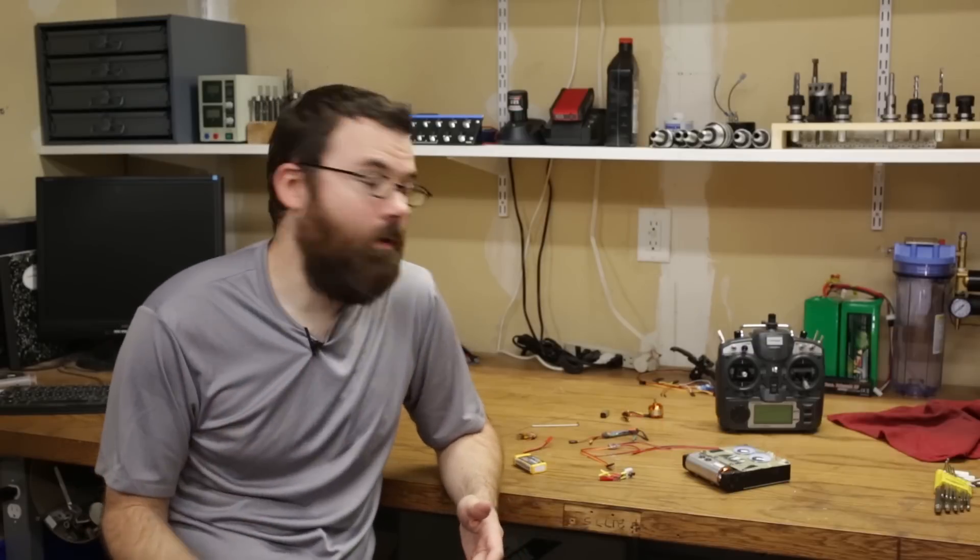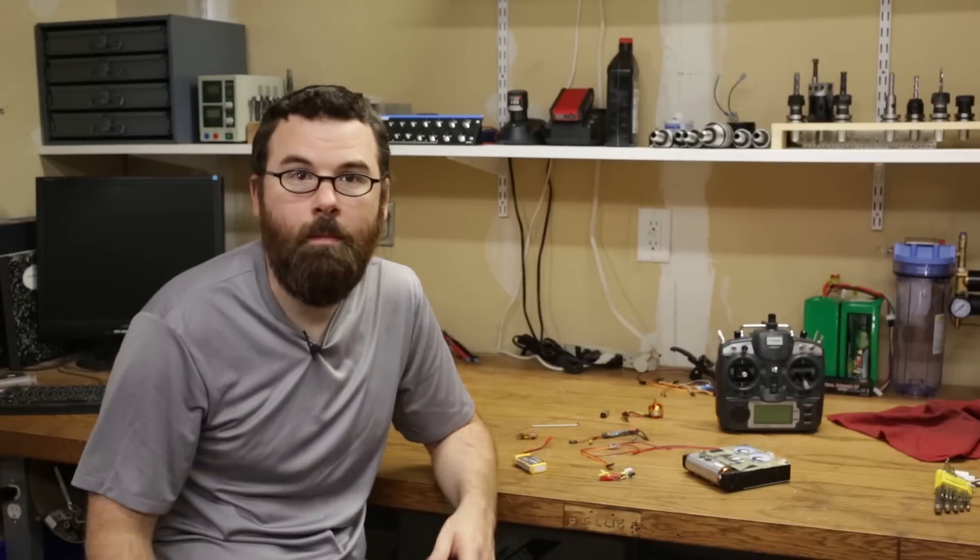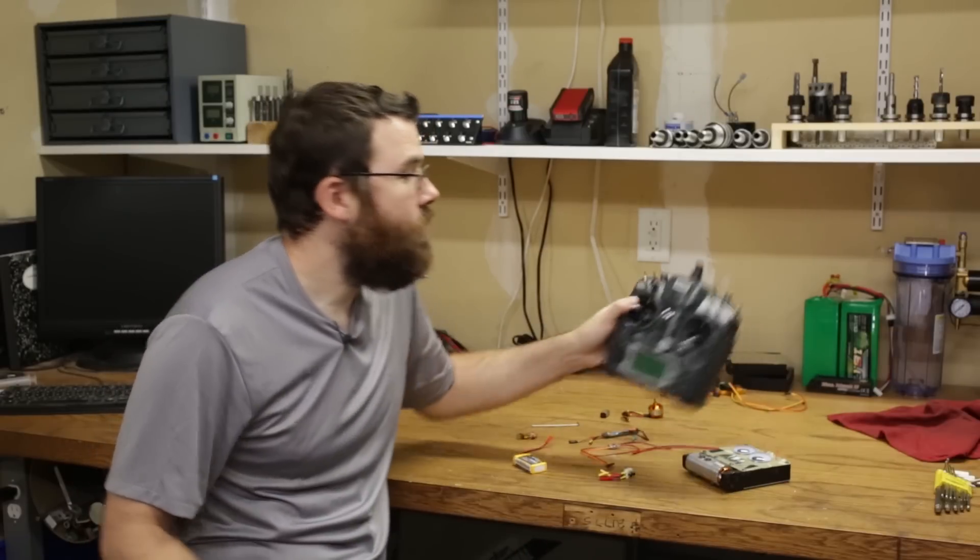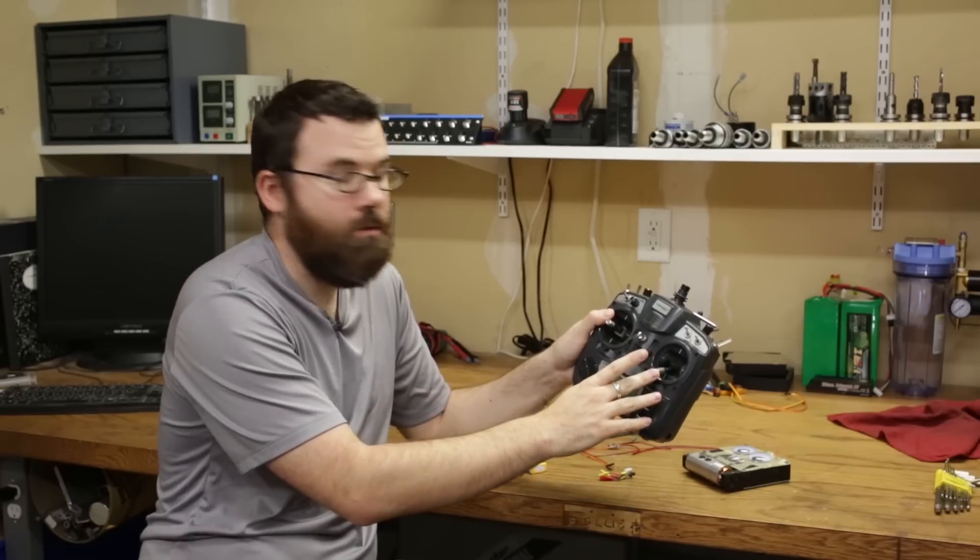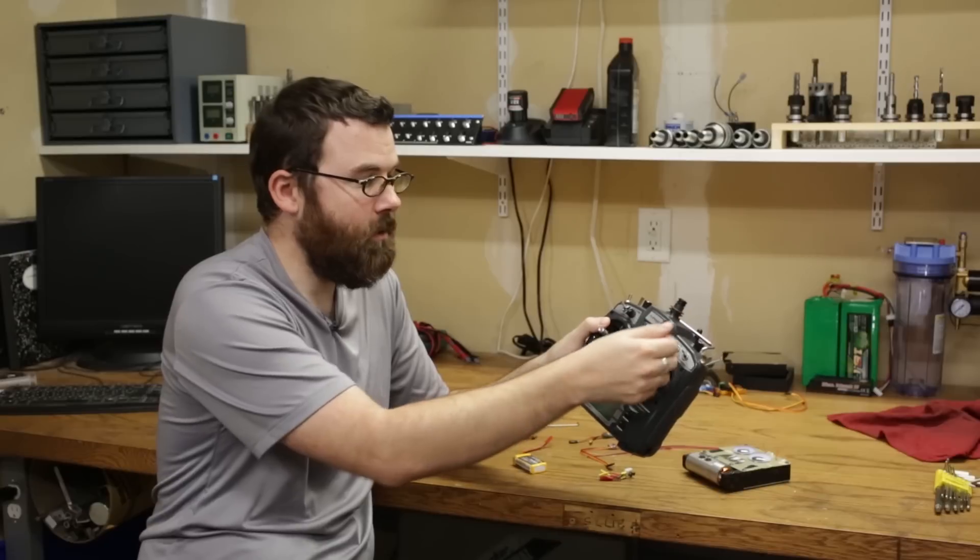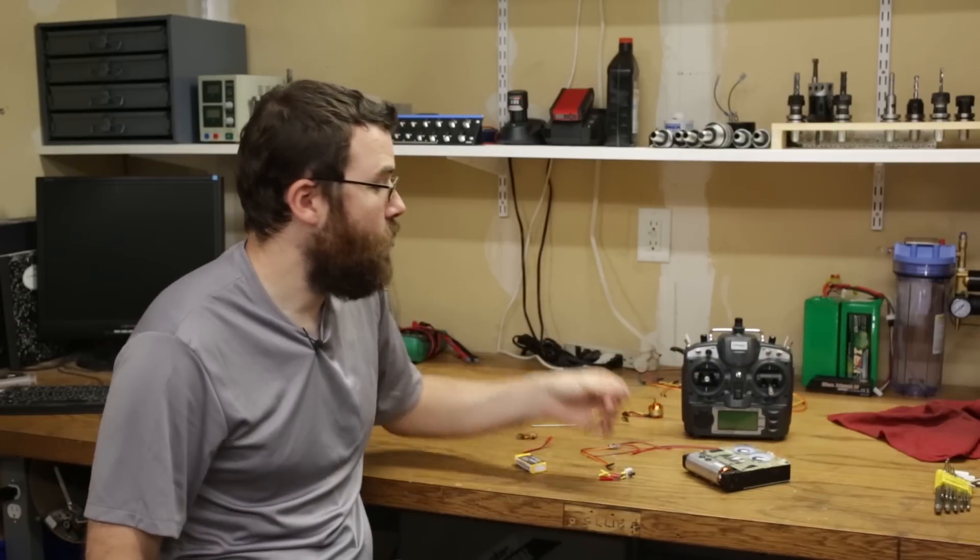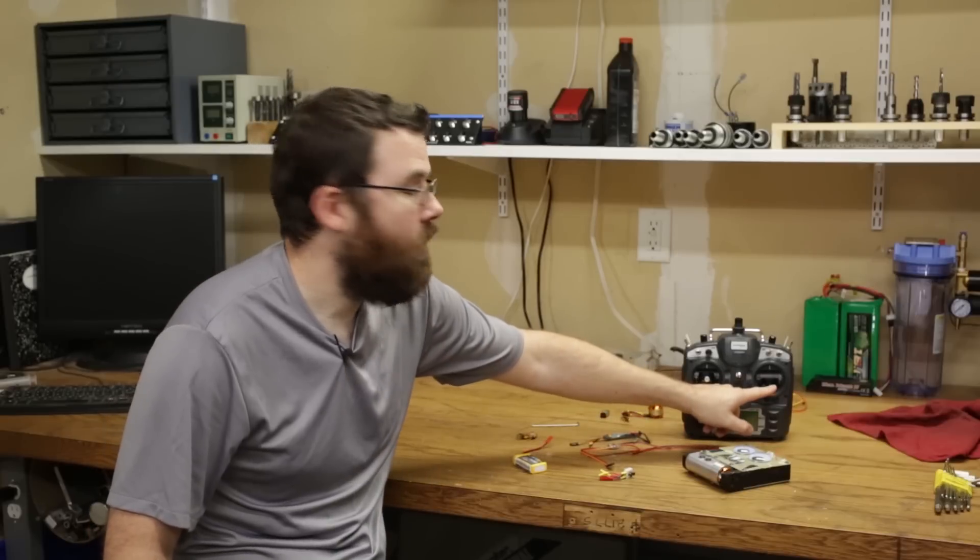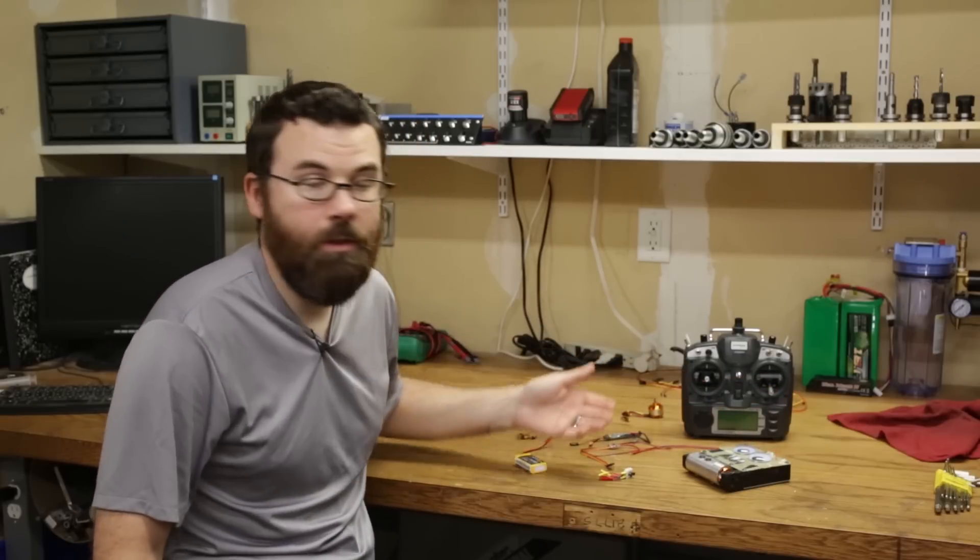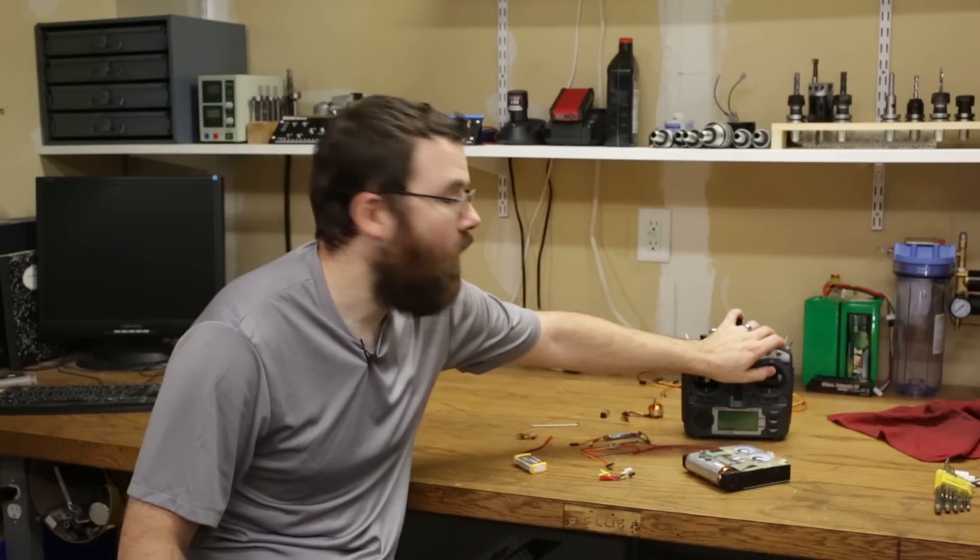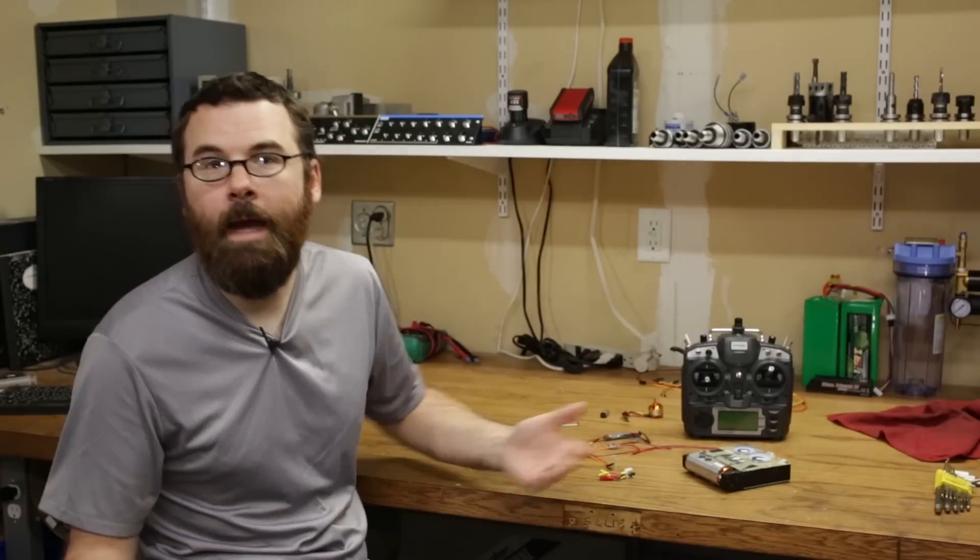When we hooked up the servo to the whole receiver combo thing earlier, I showed you that it essentially controls the servo's position based on where the joystick is. That is really not that different from how the speed controllers work. If I have the position all the way down at zero, the motor spins at zero RPM. And as I go all the way up to max, it spins at max RPM.